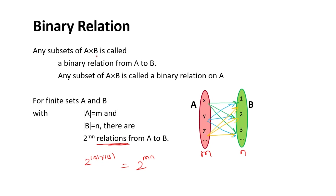Any subset of A cross B is called a binary relation from A to B. Where the cardinality of A is M and the cardinality of B is N, there are 2 to the power M times N relations from A to B possible.